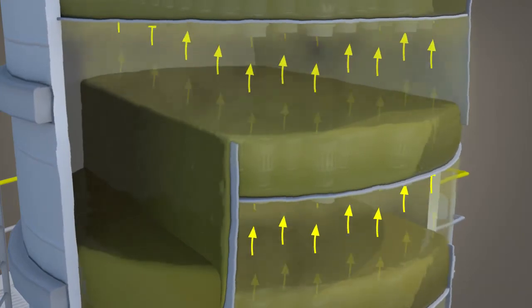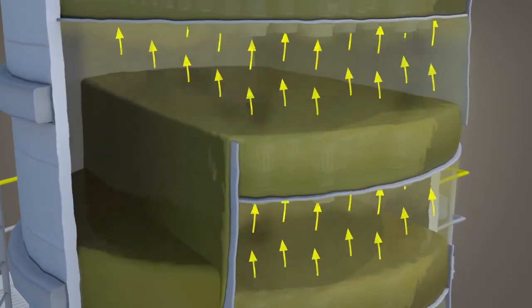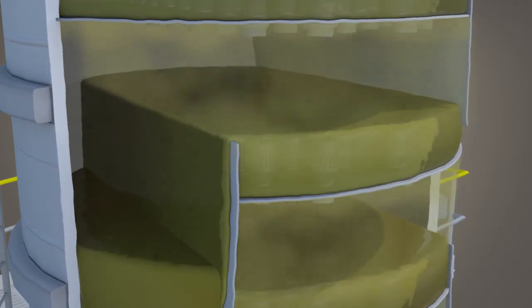This process is repeated on each tray, further separating lighter components overhead and heavies to the tower bottom.